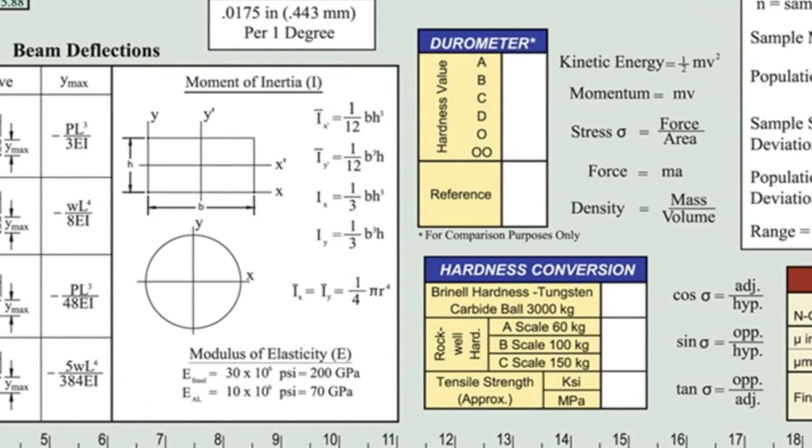To the right, a table of relative comparisons of hardness values across the durometer scales. Below that, a hardness conversion table that allows you to quickly cross-reference Brinell hardness to the Rockwell A, B, and C scales to tensile strength.